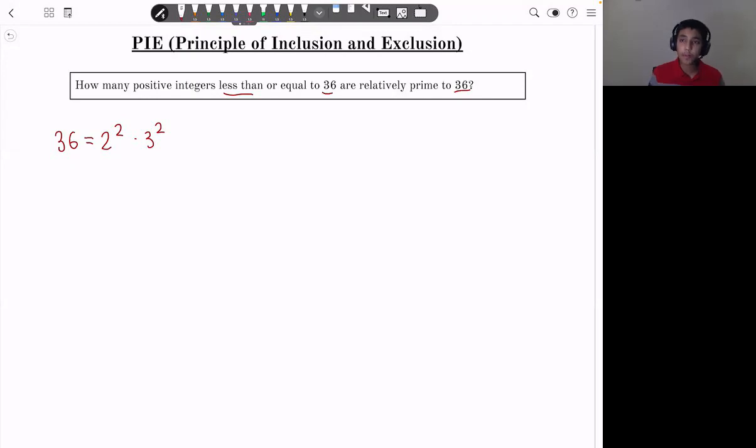So let's use complementary counting to subtract the number of numbers that are factors of 2 or 3. There are 36 divided by 2 equals 18 multiples of 2, 36 divided by 3 equals 12 multiples of 3, and 36 divided by 6 equals 6 multiples of 6.